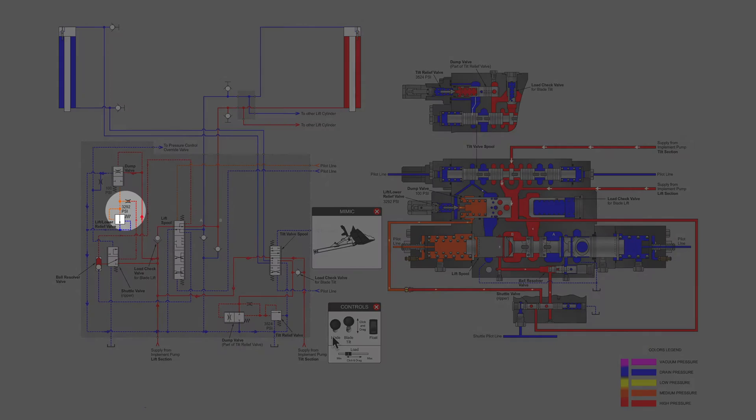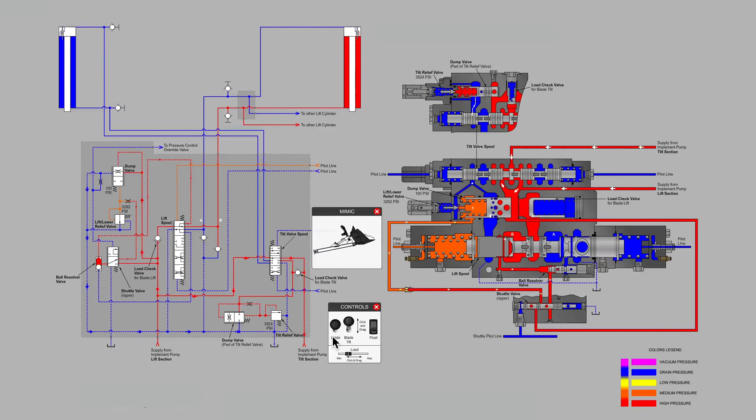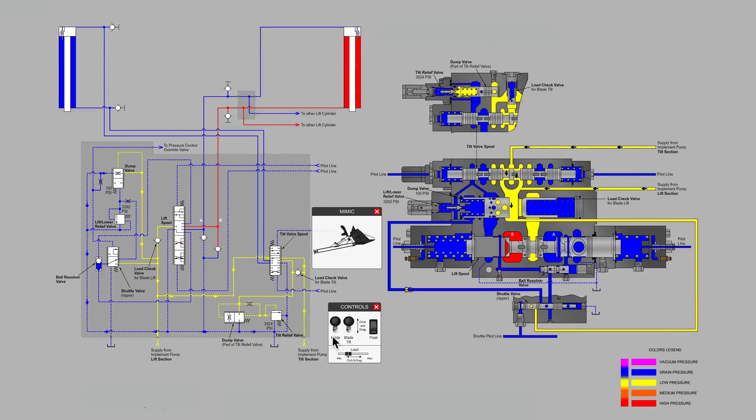indicated as 3,292 psi, the setting for this particular system. If we let go of the blade valve handle and let that valve spool return to its center position, it's re-centered via springs on each side of the lift spool, now we see that what was our relief valve main poppet has become a dump valve.